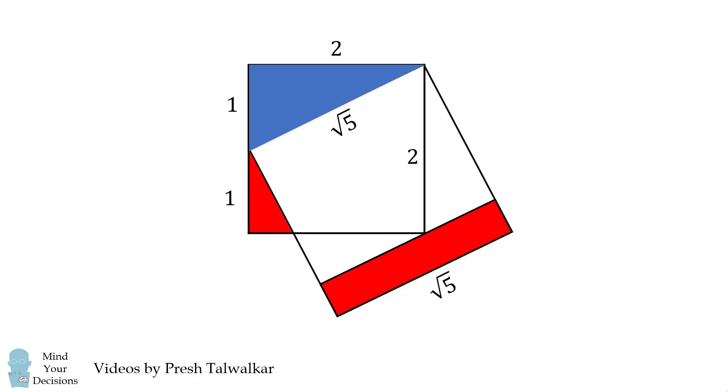Now we're going to consider some similar triangles. This blue triangle will be similar to the red triangle. Therefore, the smaller leg has to be half the length of the larger leg, so this will be a length of 0.5.